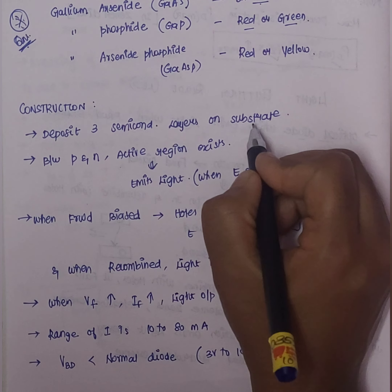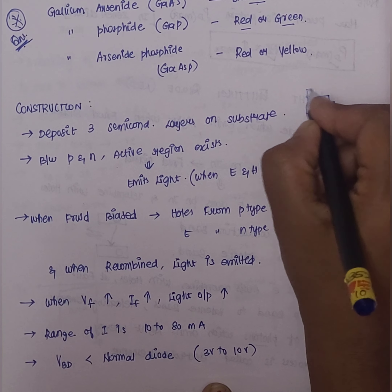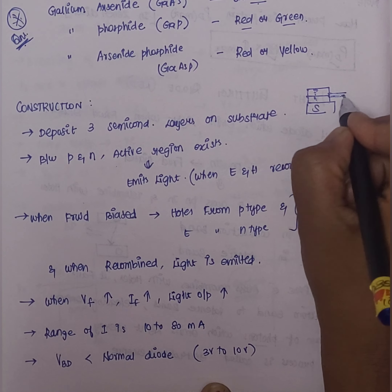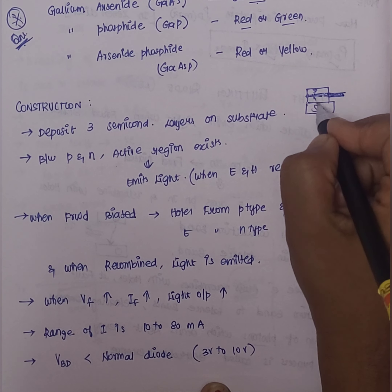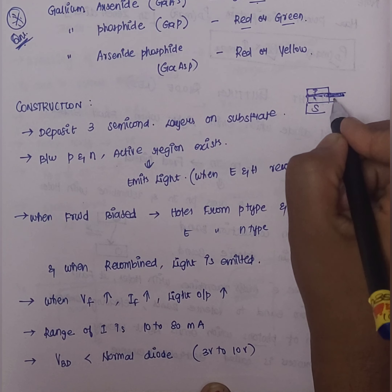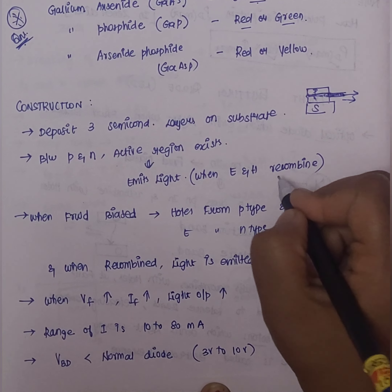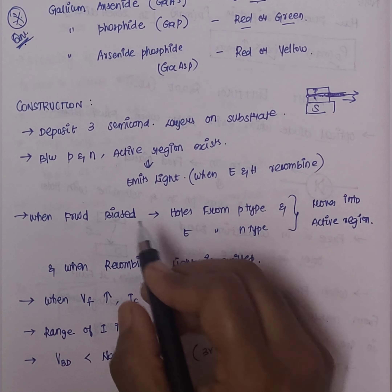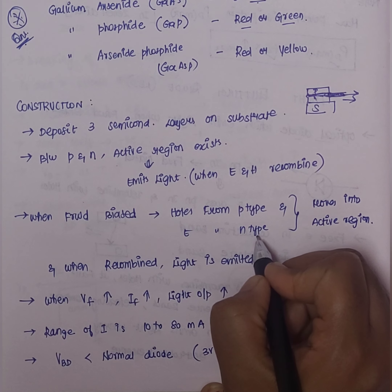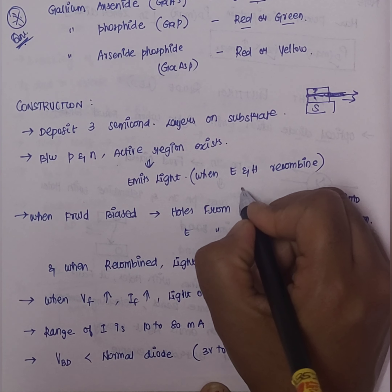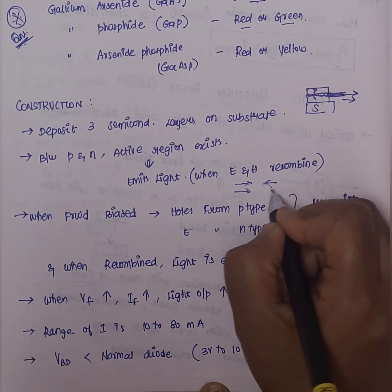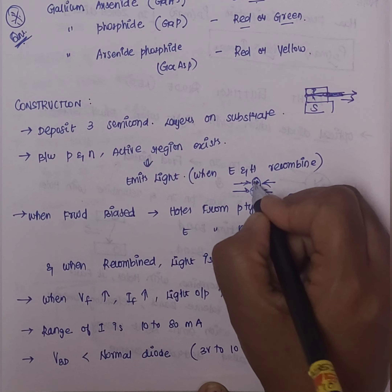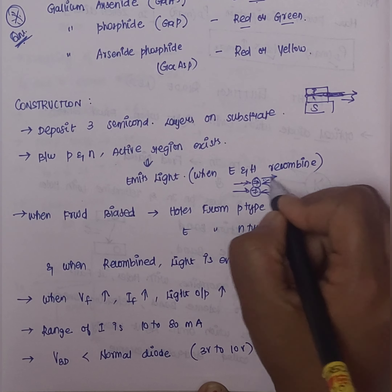Here we have two layers and an active region, making this a 3-layer semiconductor. In this active region we emit light. When electron holes are recombined, we emit light rays in the active region. With forward bias, holes are in the p-type and electrons are in the n-type. The electrons and holes combine, and we emit light rays.